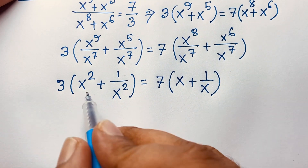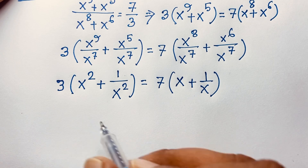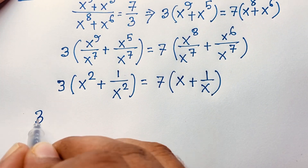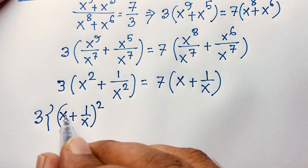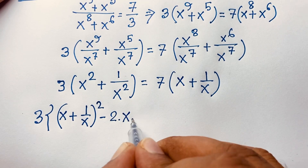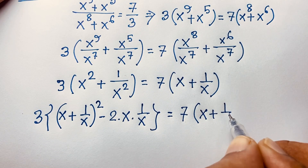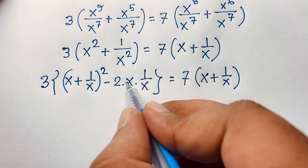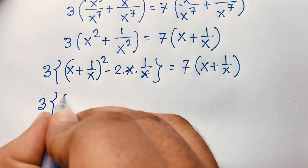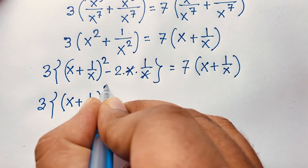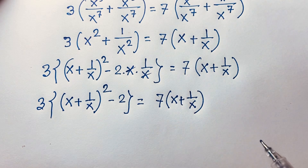We know the identity: a squared plus b squared equals (a plus b) whole squared minus 2ab. Applying this formula here, with a equal to x and b equal to 1 over x, it becomes 3 times (x plus 1 over x) whole squared minus 2, equal to 7 times (x plus 1 over x). The x terms cancel appropriately.